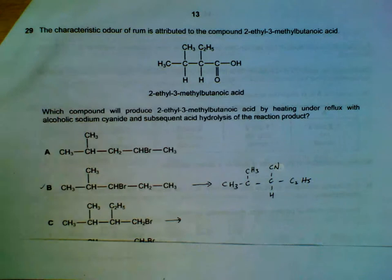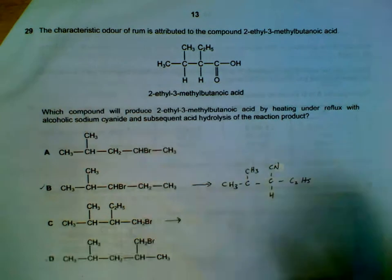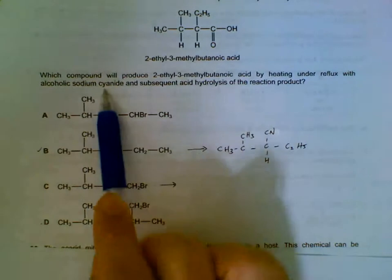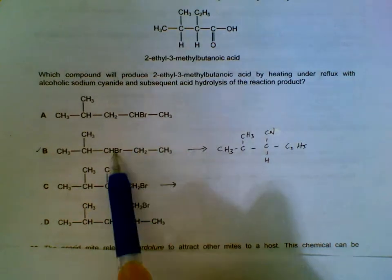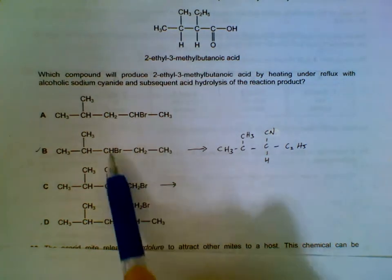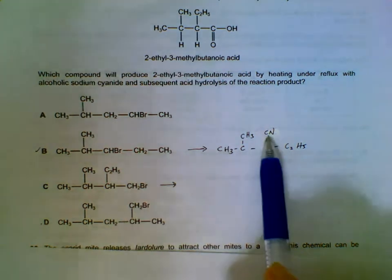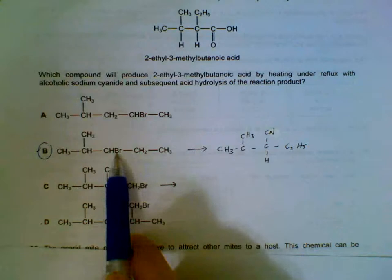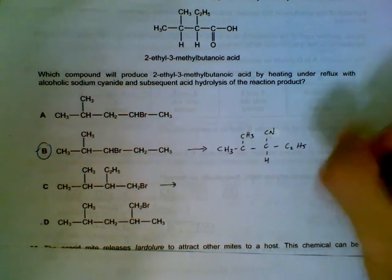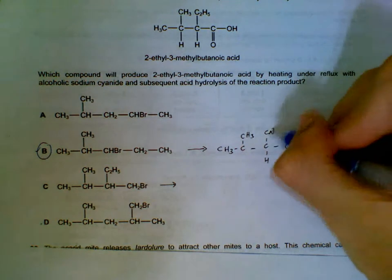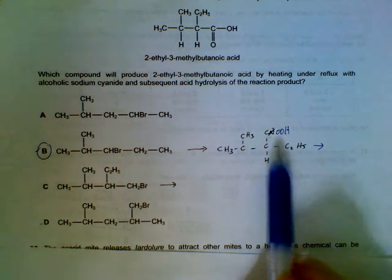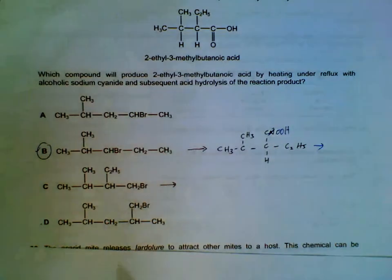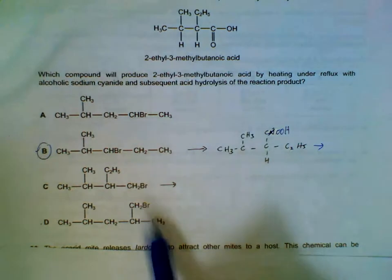Number 29: how can we produce this molecule from the four options? We add sodium cyanide and then hydrolyze it. The cyanide CN will be attached to replace the bromines. We put the CN to replace the bromines for the four options, and then we change the CN to COOH. In this case the answer is B. If I replace the CN here, this is what we get, and then this CN after hydrolysis becomes COOH, which is the same structure as the one here.